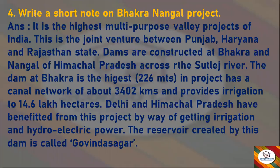Write a short note on the Bhakra Nangal Project. It is the highest multi-purpose valley project of India, a joint venture between Punjab, Haryana, and Rajasthan. Dams are constructed at Bhakra and Nangal in Himachal Pradesh across the river Sutlej. The dam at Bhakra is the highest at 226 meters. The project has a canal network of about 3,402 kilometers and provides irrigation to 14.6 lakh hectares. The reservoir created is called Govinda Sagar.